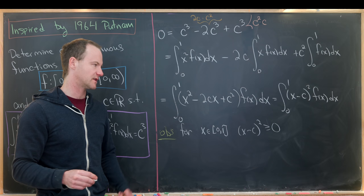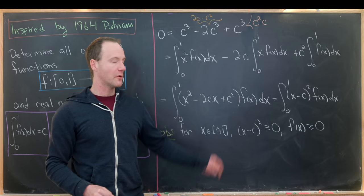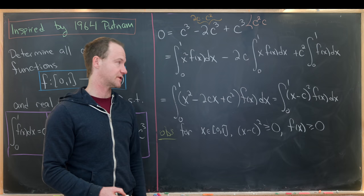And then also we know that f(x) is bigger than or equal to 0, and we know about that just by our defining property of our function over here, that its codomain is non-negative real numbers.